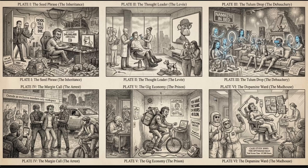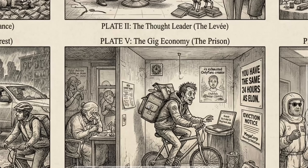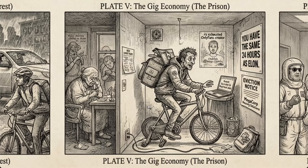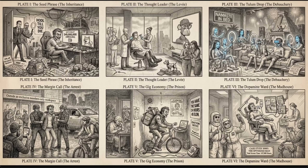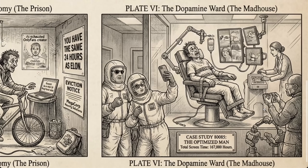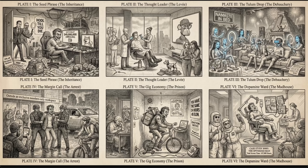I'd have been pretty impressed just by one of these being the image. He gets into some debauchery, and then there's a margin call. In the original he goes to a debtor's prison — I've actually been to that location in London — but here the prison is the gig economy. In the background it says he's an exhausted OnlyFans creator, still working for Deliveroo, with the same 24 hours as Elon. Notice also the eviction notice from Megacorp Housing Solutions. Finally, just like the original, he ends up in Bedlam — or the Madhouse — in this case a dopamine ward. While a few of us might get focused on tiny smudges or imperfect details, looked at as a whole, I think that's just incredible.